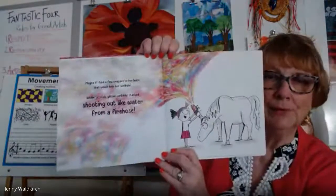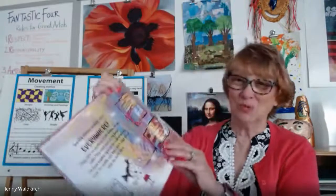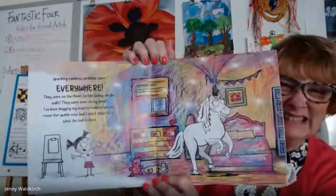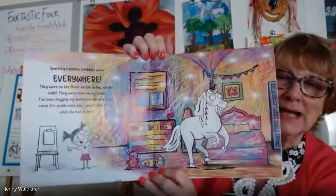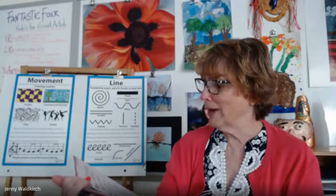Uh-oh! Sparkling rainbow scribbles were everywhere — on the wall, the floor, the ceiling, and on the lamp. "I've been begging my mom to redecorate my room for a while now, but I don't think this is what she had in mind." That unicorn's having a big time! Then I heard a noise down the hall. I was going to be in so much trouble. I popped out of my room and blocked the door. Before my mom could say anything, I started to explain the mess. "Well, it all started when I heard you never let a unicorn scribble, but I had to find out why."